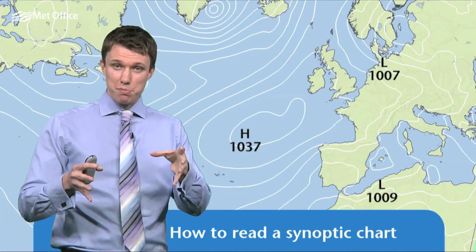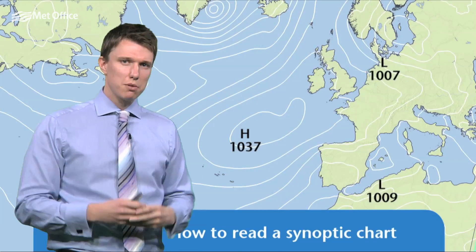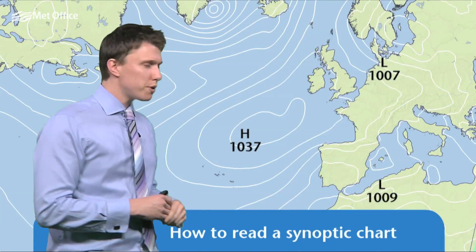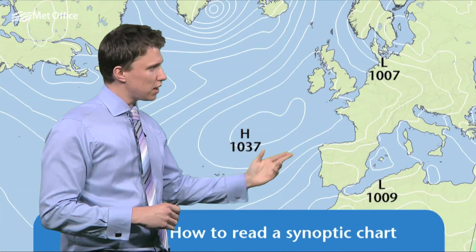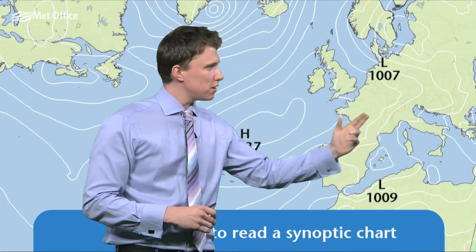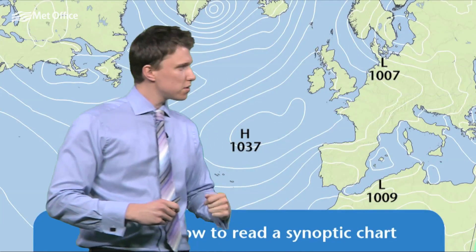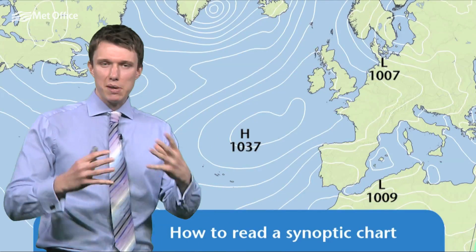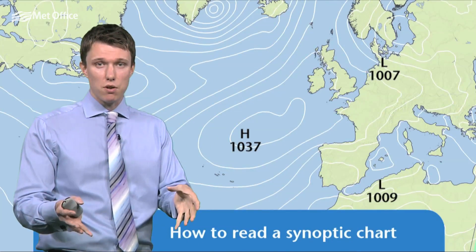So we know something about the speed of the wind, but what about where it's coming from? Well, we know that air moves around areas of high pressure in a clockwise direction, and in low pressure in an anti-clockwise direction. So now we know something about the speed of the wind and indeed where it's coming from.